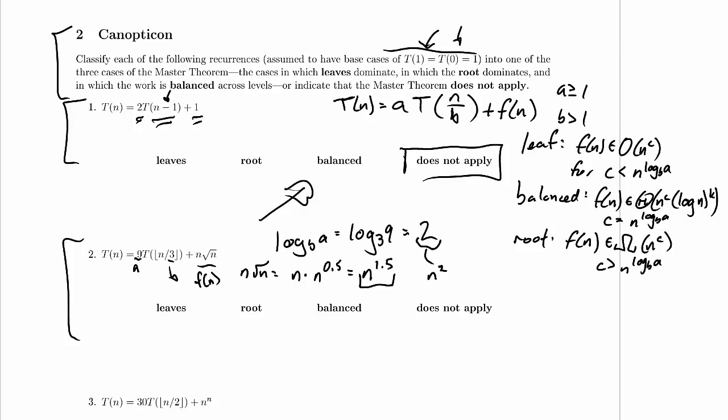Well, n to the 1.5, that's going to be little o of n squared, but what really matters is we have f(n) is in big O of n to the 1.5 for 1.5 less than log base B of A.